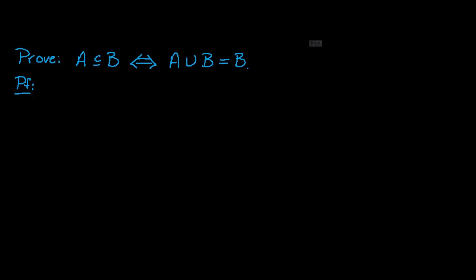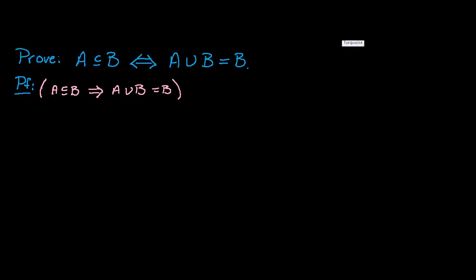Our first task will be to show that A is a subset of B implies A union B equals B. When proving a conditional statement, our strategy is to assume the hypothesis and show the conclusion. So we assume A is a subset of B and we need to show that A union B equals B.